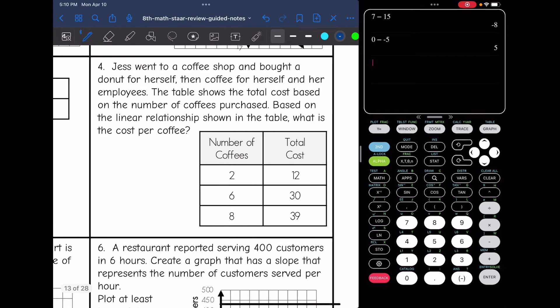Number 4 says, Jess went to a coffee shop and bought a donut for herself, then coffee for herself and her employees. The table shows the total cost based on the number of coffees purchased. Based on the linear relationship shown in the table, what is the cost per coffee? So they didn't come out and say what is the slope, but they are asking for the cost per coffee. That keyword per, it's going to repeat, that's a big clue that it's going to be slope that we're finding.